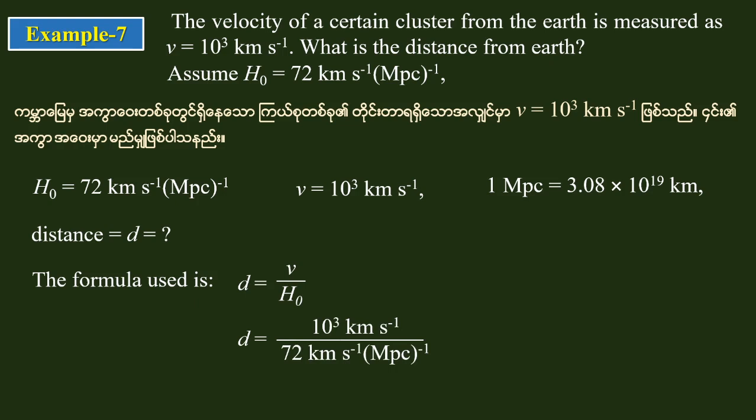So D equals v divided by H₀, which is 10³ divided by 72 km/s per megaparsec. This gives approximately 13.88 megaparsecs.